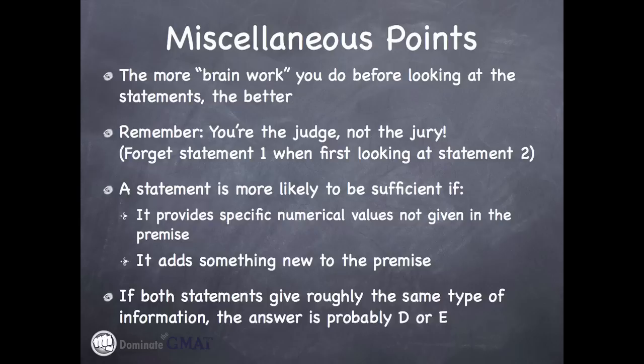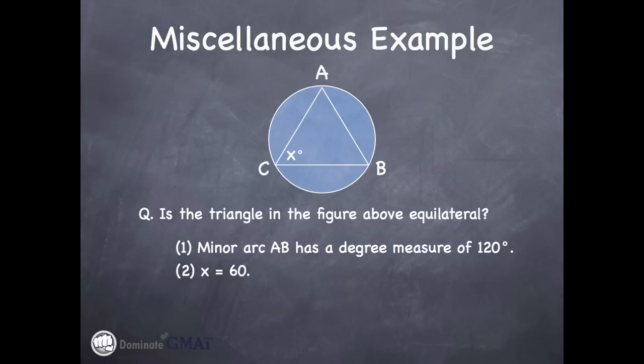So that's why the answer choices you're going to choose from are either D or E. Let's take a look at an example like that. Here we see a geometric shape. Our default assumption should be that figure is not necessarily drawn to scale. It's a geometric shape, and the question is, is the triangle in the figure above equilateral? It certainly looks equilateral, but what we're trying to do is determine whether we've been given enough information mathematically in the statements to make that determination.